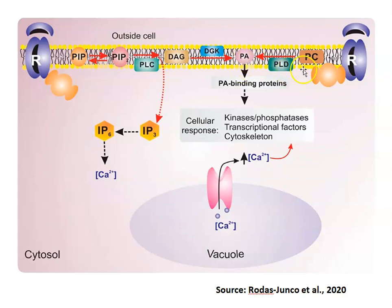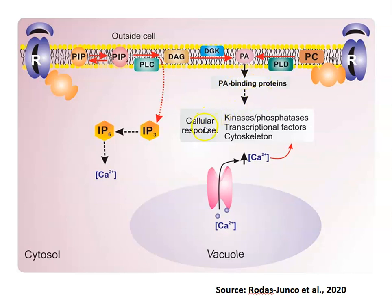PA can also be generated by PC — phosphatidylcholine — hydrolyzed by PLD (phospholipase D enzymes) to form PA, that is phosphatidic acid. IP3 diffuses into the cytosol, where it is converted to IP6, for which several new signaling functions are emerging, like calcium release from the vacuole. PA — phosphatidic acid — then binds to PA-binding proteins and generates specific cellular responses.